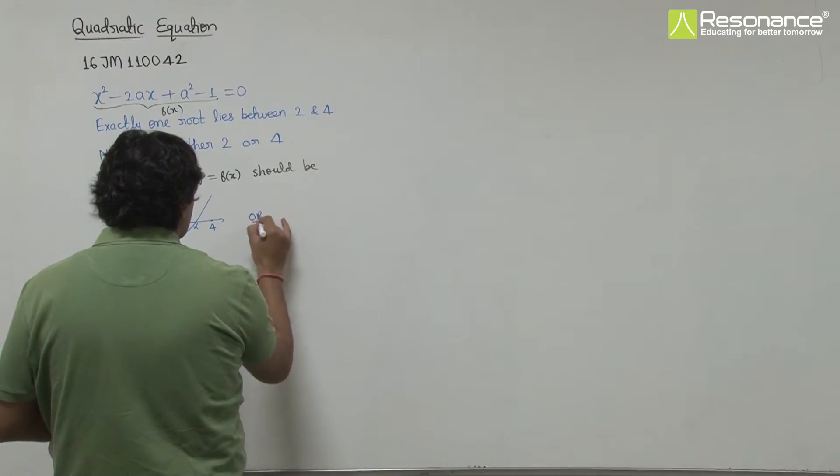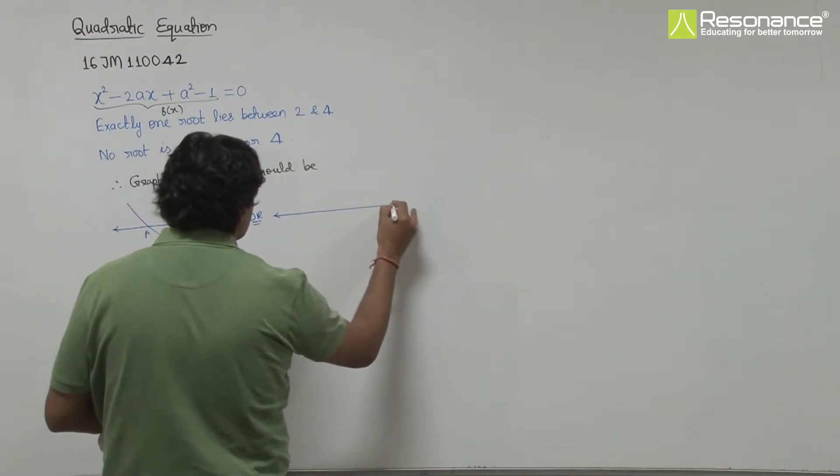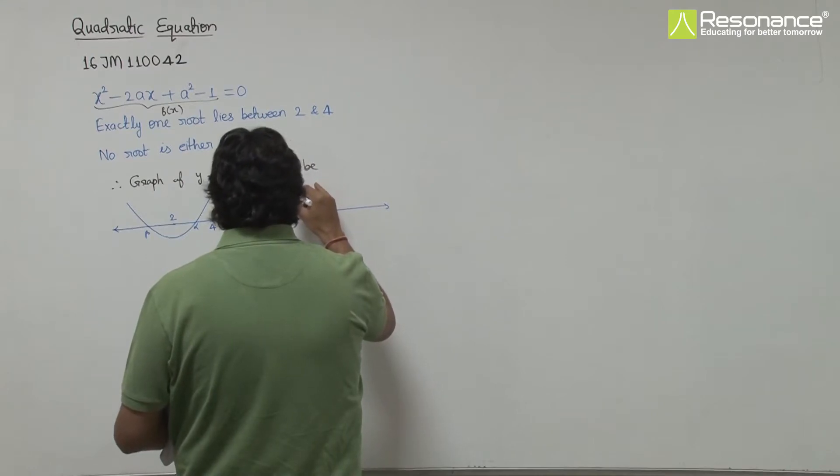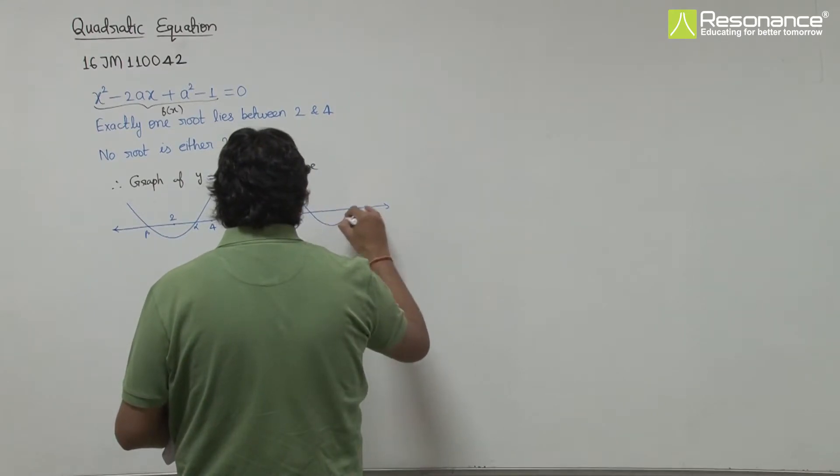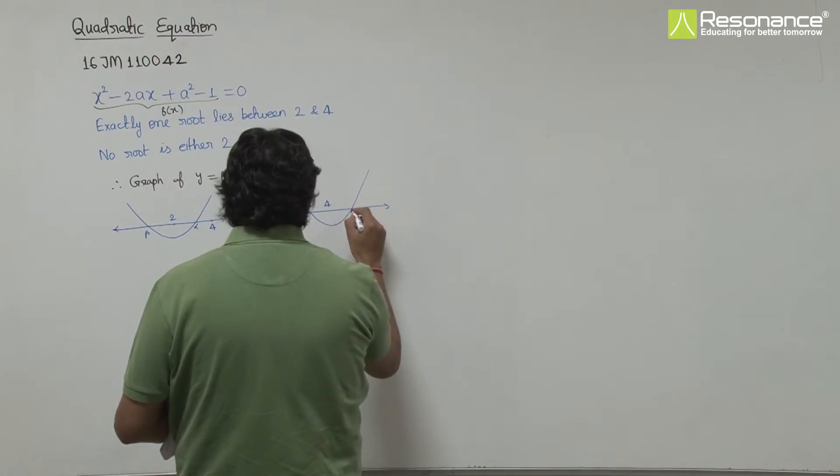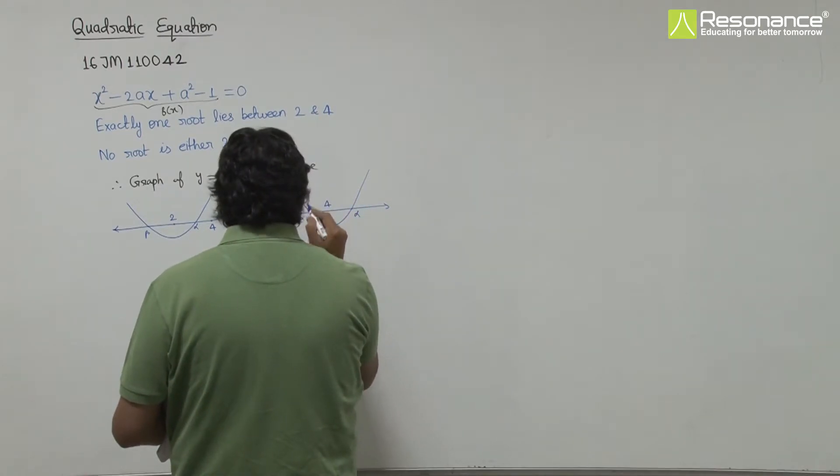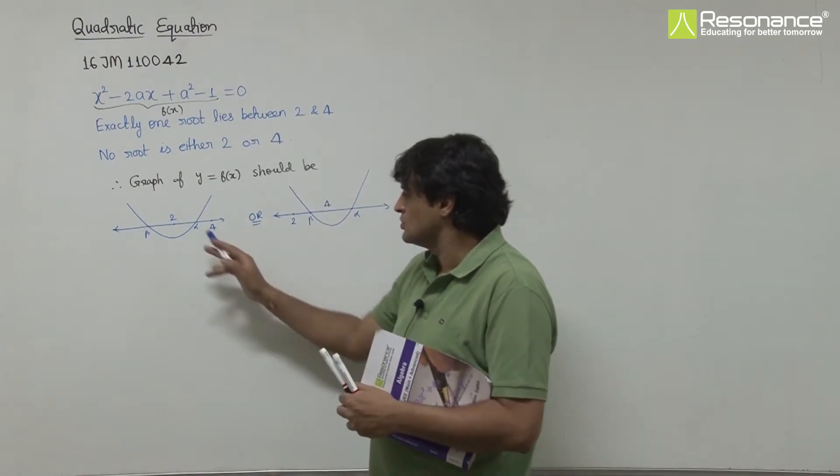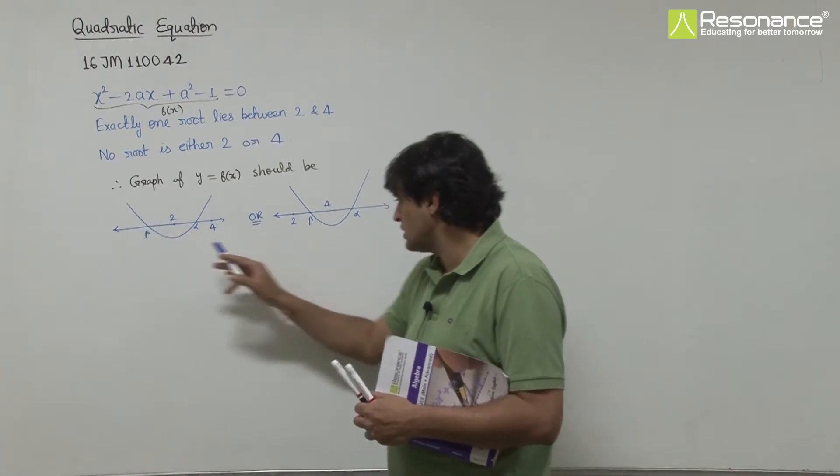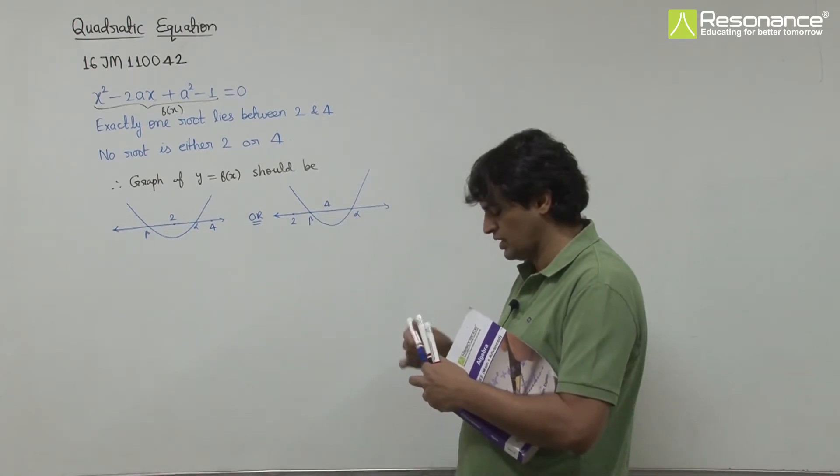Or like this. If exactly one root lies between 2 and 4, then the other root will be either less than 2 or greater than 4.